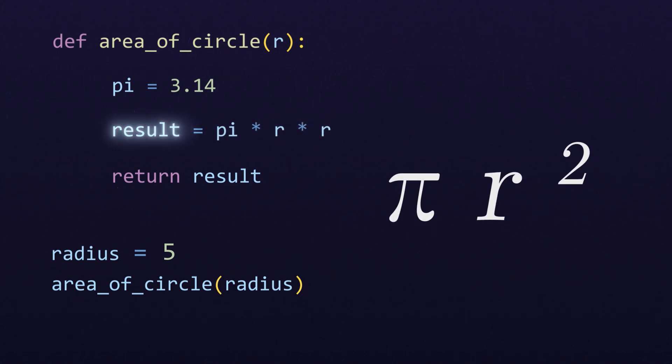The area of a circle is pi r squared, after all. Finally, we return the result from the function as its output.